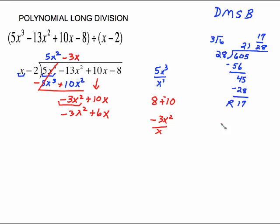Then we're going to draw the line, change the signs. Plural, you're changing all of those signs. Look here. Negative 3x squared, positive 3x squared cancels out. And all you have to do is 10x minus 6x is 4x. Bring down the next term which is a negative 8 and then begin again.